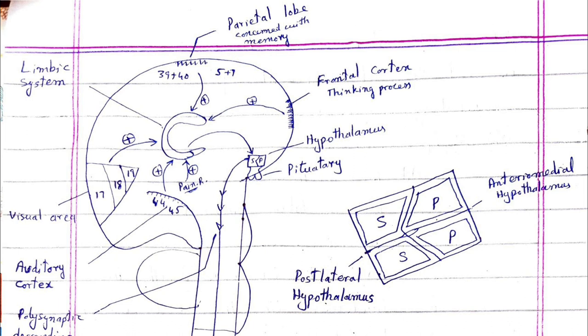See the image how it activates. See the hypothalamus which consists of two parts: anterior medial part and posterior lateral part. Anterior medial part is responsible for Parasympathetic nervous system and posterior lateral part is responsible for Sympathetic nervous system.